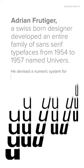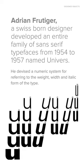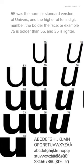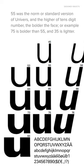He devised a numeric system for referring to the weight, width, and italic form of the type. 55 was the norm or standard version of Universe, and the higher the tens-digit number, the bolder the face — for example, 75 is bolder than 55, and 35 is lighter.